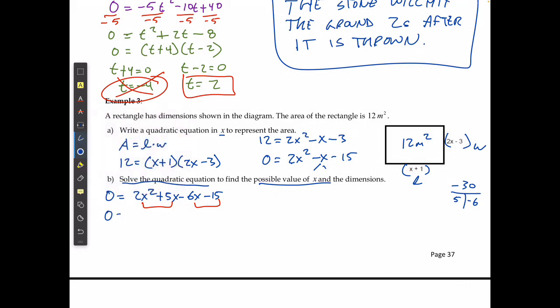And I'm going to get 0 is equal to x and 2x plus 5 and I'm going to have to divide out negative 3 and 2x plus 5. 0 is going to equal 2x plus 5 and x minus 3.